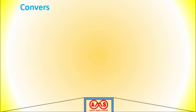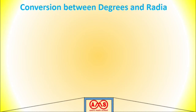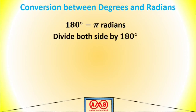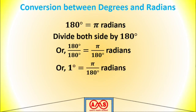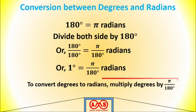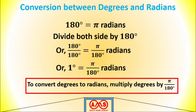Let's simplify this relation — that is, the conversion between degree and radians. We know 180 degrees equal to π radians. If we divide both sides of this equation by 180 degrees, we get 1 degree equal to π/180 radians. So this is the rule: to convert degrees to radians, multiply the degree value by π/180.